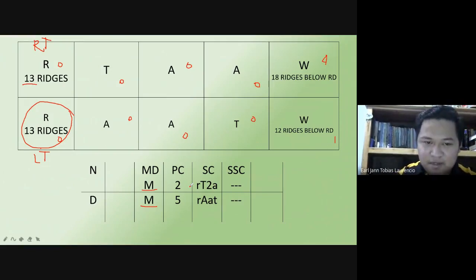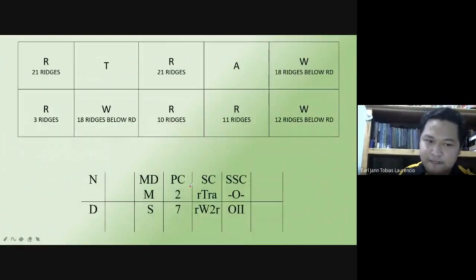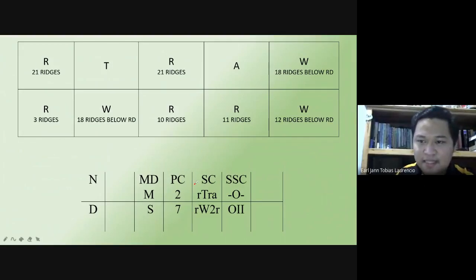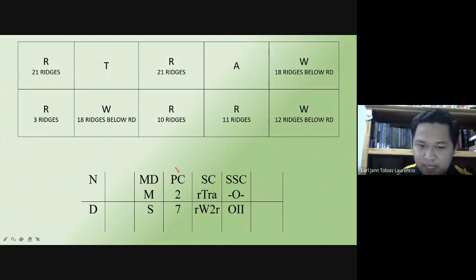Another example. The primary classification is 2 over 7: numerator — 0, 0, 0, 0, 0, 1 plus 1 is 2; denominator — 0, 0, 4, plus 2 is 6, plus 0 is 6, plus 1 is 7. Correct. The secondary is: numerator — small r, big T, small r, small a; denominator — small r, big W, small r. Correct.